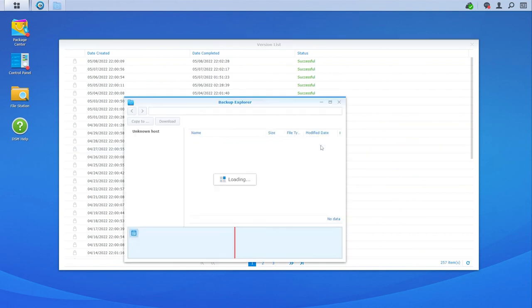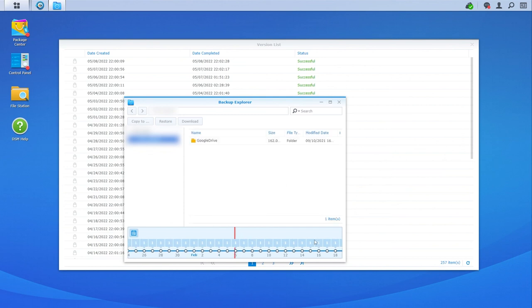The backup also includes versioning, so we can access older versions of previous files in case something that shouldn't have been deleted or changed needs to be recovered.